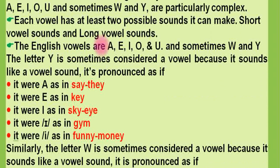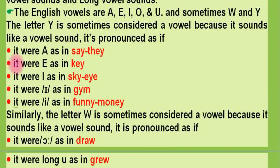The English vowels are A, E, I, O, U, and sometimes W and Y. The letter Y is sometimes considered a vowel because it sounds like a vowel sound. It's pronounced as if it were A, as in 'say' and 'they'; as if it were E, as in 'P'; as if it were I, as in 'sky'; and as if it were short E, as in 'funny' and 'money'.